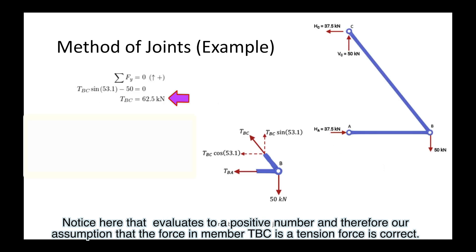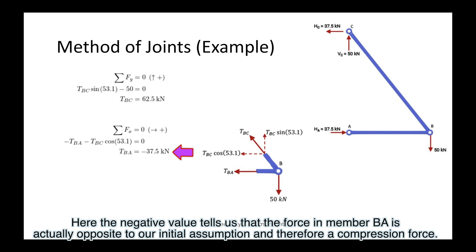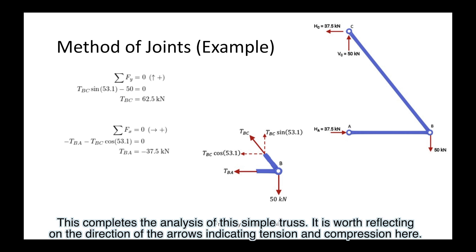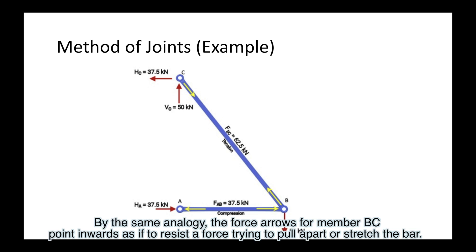Notice here that it evaluates to a positive number, and therefore our assumption that the force in member BC is a tension force is correct. Now evaluating horizontal force equilibrium, the negative value tells us that the force in member BA is actually opposite to our initial assumption and therefore is a compression force. This completes the analysis of this simple truss. It is worth reflecting on the direction of the arrows indicating tension and compression here. For member BA in compression, the yellow force arrows point outward as if to resist a force compressing the member. By the same analogy, the force arrows for member BC point inwards, as if to resist a force trying to pull apart or stretch the bar.